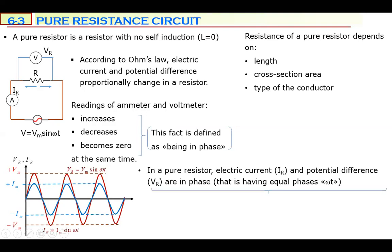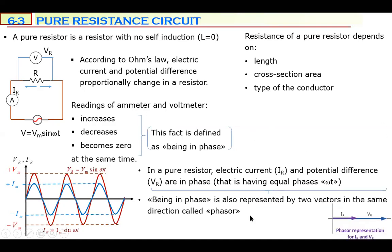The red graph is the potential difference and the blue is the electric current — they are in phase, changing together. Their equations are also the same: IR equals Im sine(ωt), and VR equals Vm sine(ωt). In a pure resistor, IR and VR are in phase — equal phases, ωt for both. This is also represented by two phasor vectors in the same direction.